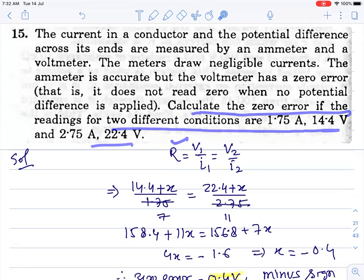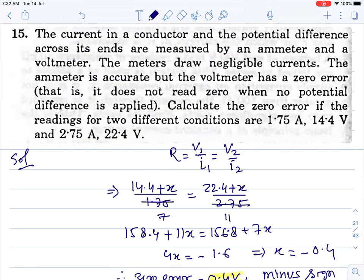Calculate the zero error if readings for two resistance, two different conditions are this much. The resistance is the same - its value should remain the same. So the different measurements should give the same resistance. So V1 by I1 equals V2 by I2 equals R, because resistance has got its own value.